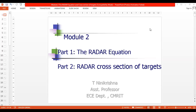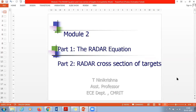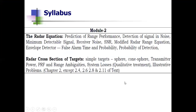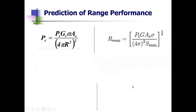Welcome back. This is the second video, covering part one of module two. The topic is receiver noise and SNR. Looking at the syllabus, in the previous video we completed prediction of range performance and detection of signal in noise — the minimum detectable signal — which was covered in module one. This video addresses receiver noise and SNR.